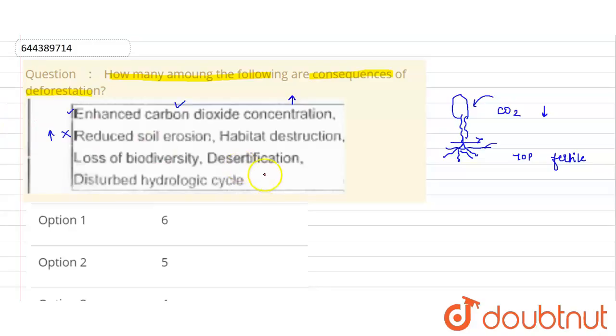Second is habitat destruction. Now this forest is the habitat for n number of species living in this particular area. Now no trees, no trees, so no birds will come and sit on this tree. They cannot build their own nest, so they have lost their habitat. Similarly, go with each and every species living in that forest.